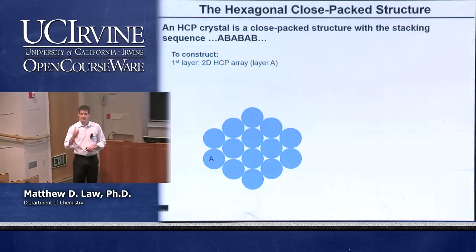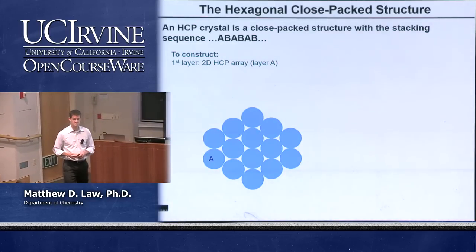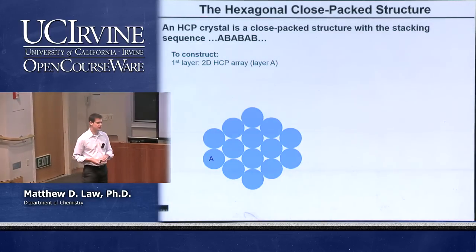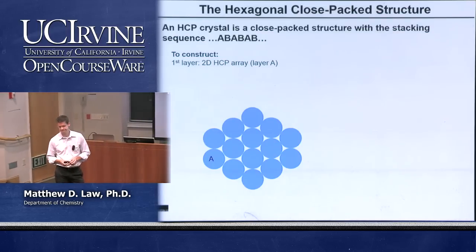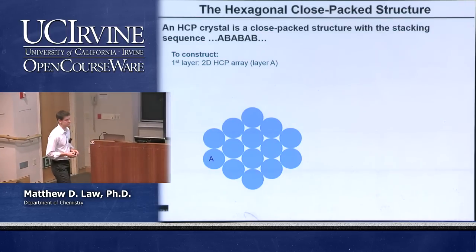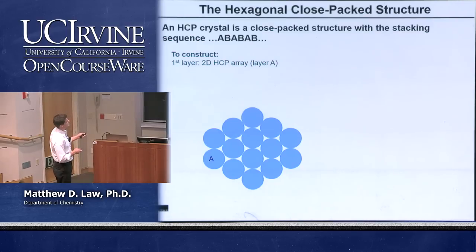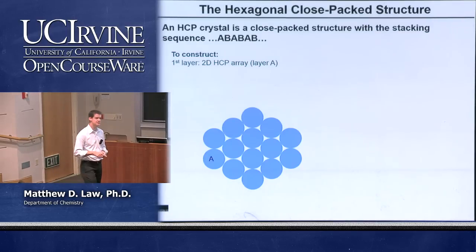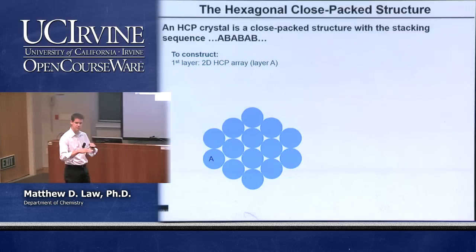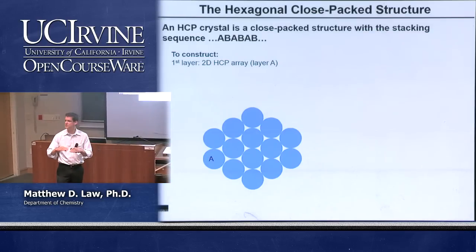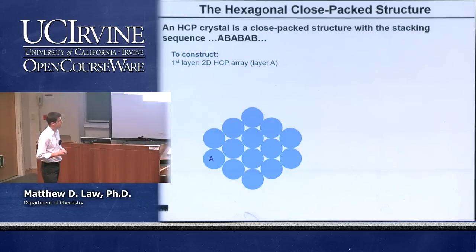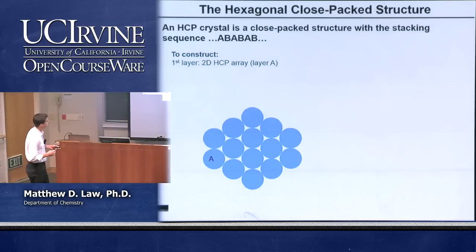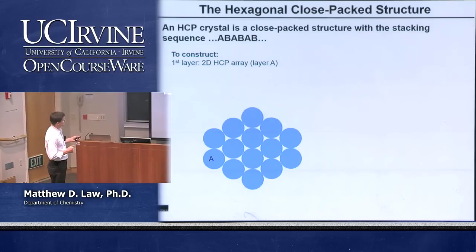Let's look at two important close-packed structures. The hexagonal close-packed crystal is built by stacking the hexagonal two-dimensional layers in an ABABAB repeat sequence. Let's see how we build it. We take just a section of an infinite two-dimensional HCP sheet.